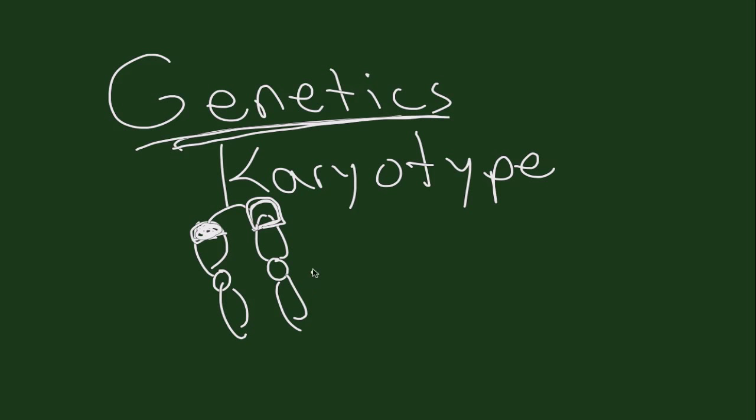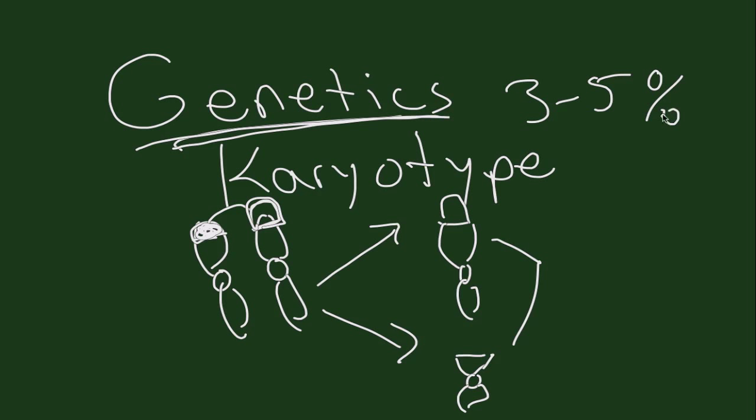However, when they go to make gametes, the sperm or the eggs, because they have to split this, you can imagine that one is going to have too much information, and one is not going to have enough information. This is what leads to recurrent pregnancy loss. This occurs in about 3% to 5% of the time in folks who have recurrent pregnancy loss.